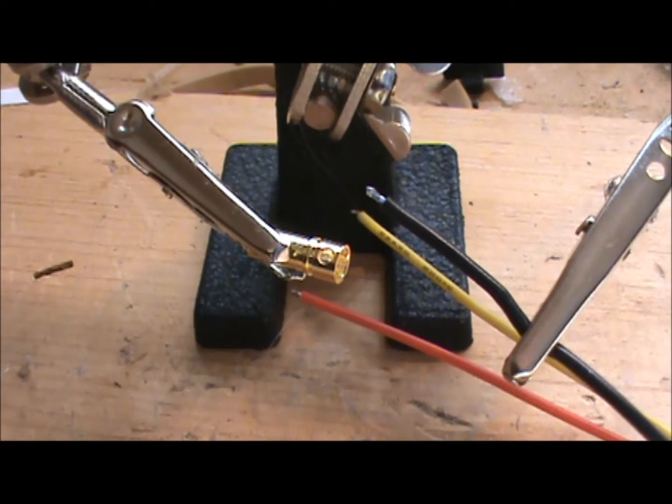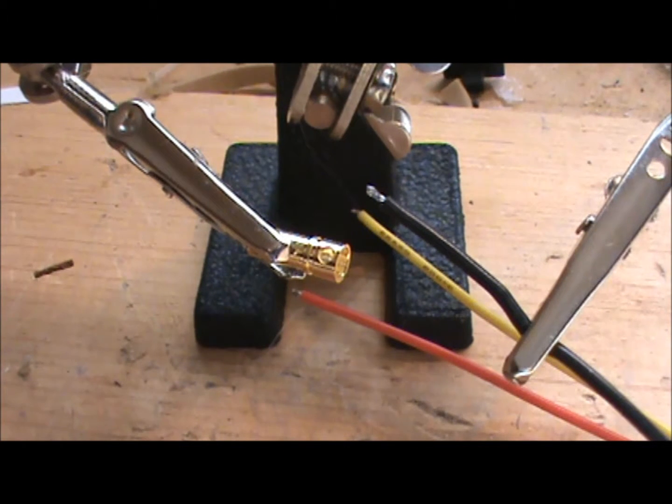Alright, let's go get soldering. Alright, so right here I'm going to show you how to solder bullet connectors onto an ESC. These are used to connect your motor to your ESC.